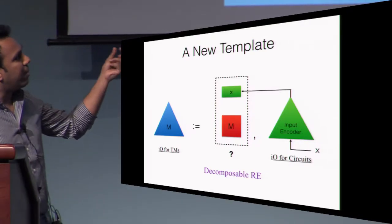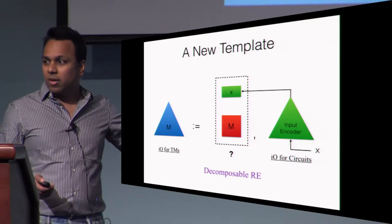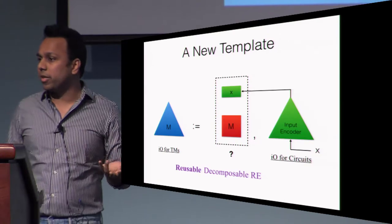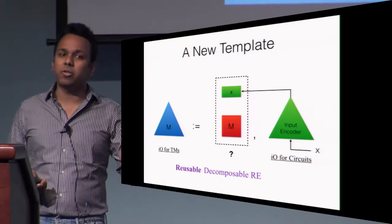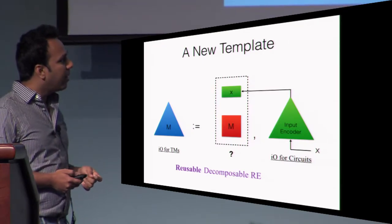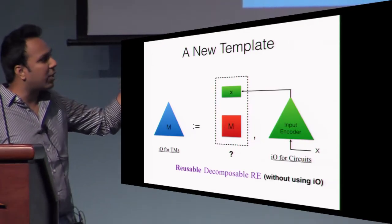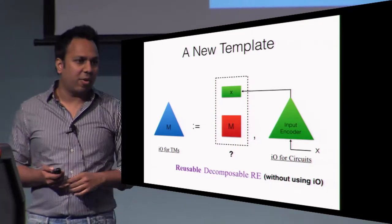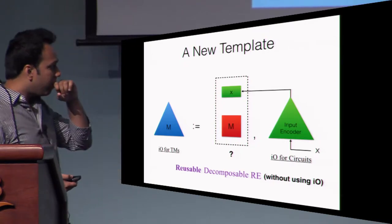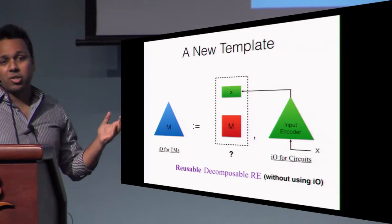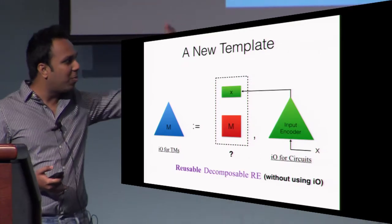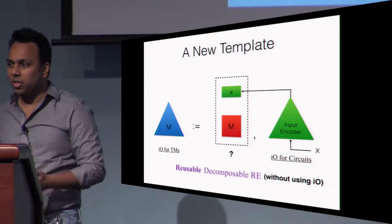Moreover, since the machine M is only encoded once, we want this randomized encoding to have a reusability property — it should be possible to reuse the encoding of M many times for evaluating different inputs. Finally, we want to be able to construct such a reusable randomized encoding without using I.O. And in order to achieve our first goal of constant overhead, we would want to construct such a reusable decomposable RE with constant overhead. That turns out to be the key technical contribution of the work.